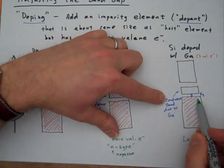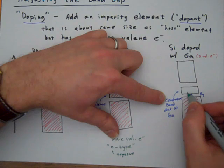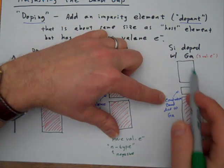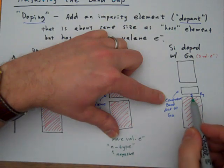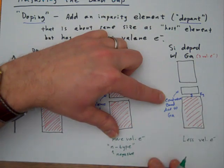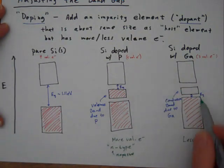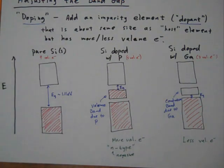So now we've got these electrons here that are in the filled valence band of the silicon, and they can hop up here into this conduction band that's caused by the gallium orbitals. And so again, that band gap is much smaller. So by adding dopants of the right kind, we can reduce the band gaps and improve the electrical conductivity of the semiconductor.